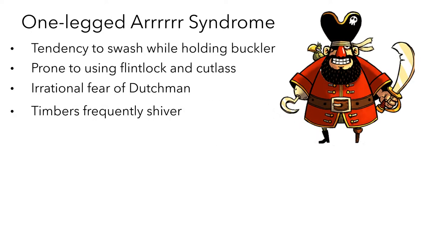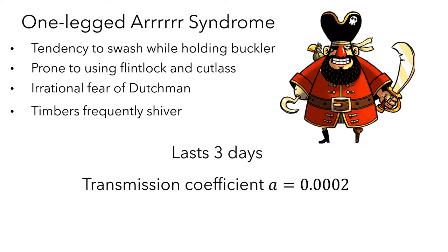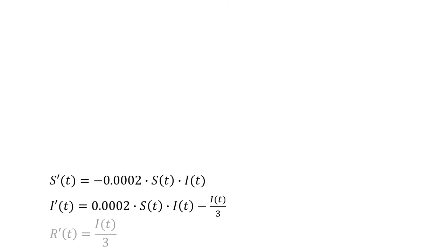Previously, we've used a made-up disease called the one-legged R syndrome for building and working with an SIR model. The things we needed to know were that the infection would last three days, it had a transmission coefficient of 0.0002, and when we started collecting information, there were 6,000 susceptible individuals, 10 infected individuals, and 5 removed individuals. We created three differential equations to model the rates at which individuals transitioned between the susceptible, infected, and removed groups.